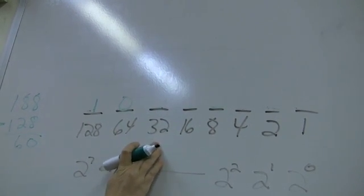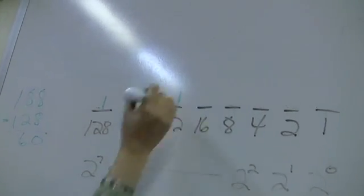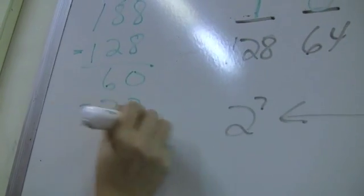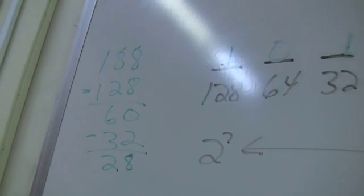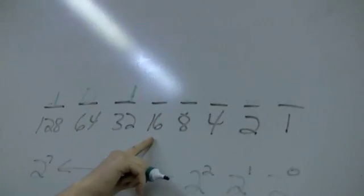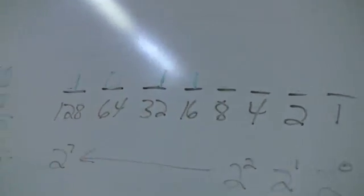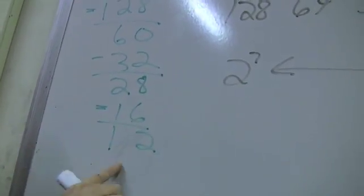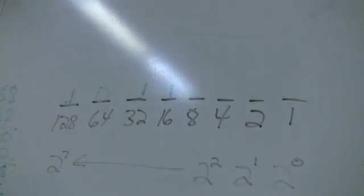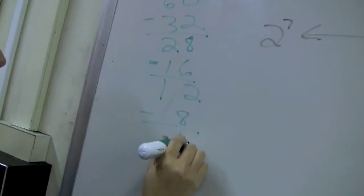32. Does the number 32 fit inside of 60? Yes, it does. So it gets a 1. And I subtract 32. And hopefully, if I do my math correctly, that's 28. Then I come to 16. Does 16 fit inside of the number 28? It does. So I put a 1 and then I subtract the 16. That leaves me with 12. Does the number 8 fit inside of 12? It does. So I put a 1 and I come over here and subtract the 8. That leaves me with 4.